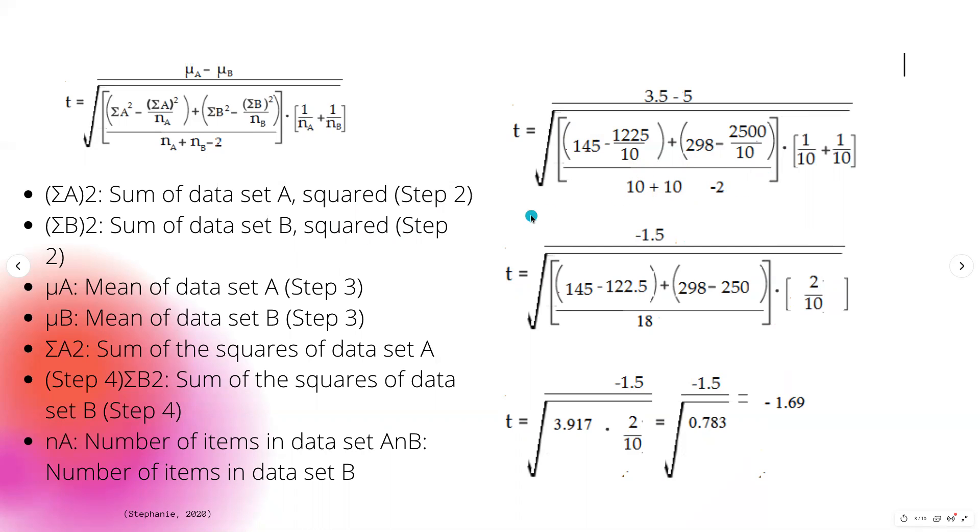You can pause and go back to see what numbers go in there specifically. But since we're pressed for time, I'm going to jump to this third section where we have our final scores of T equals negative 1.69.